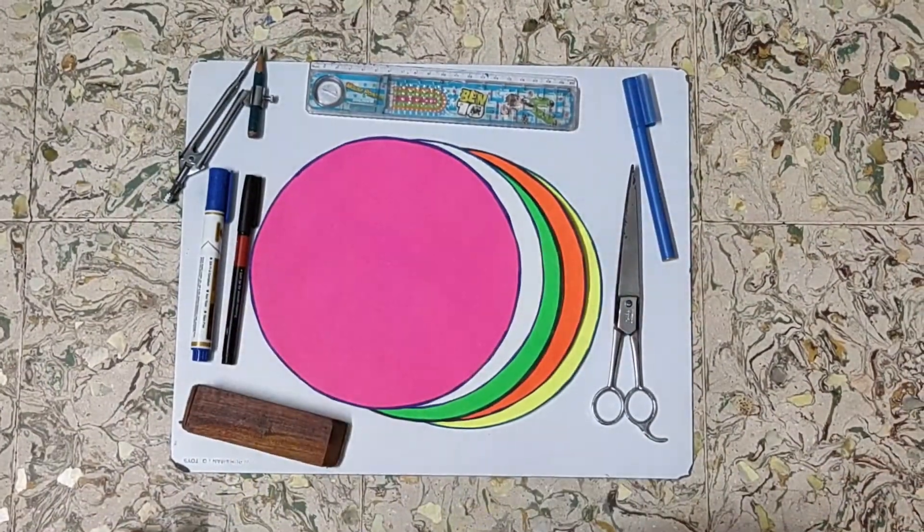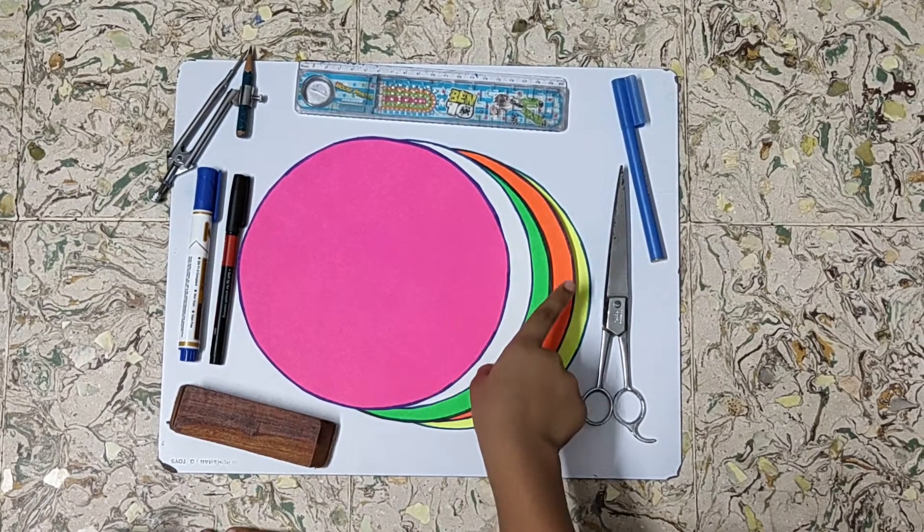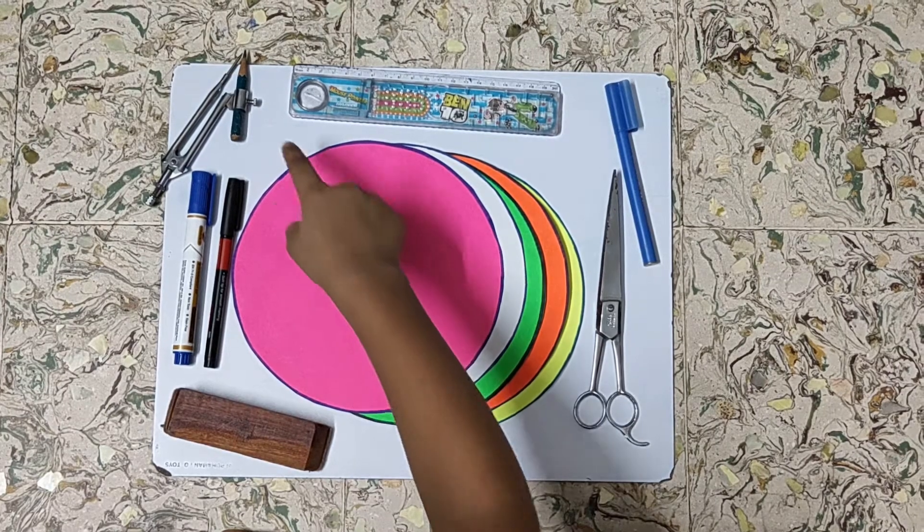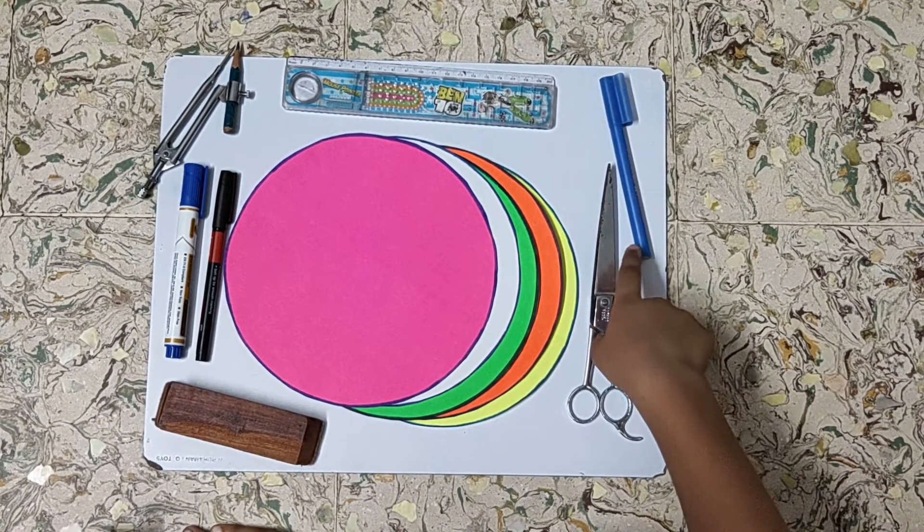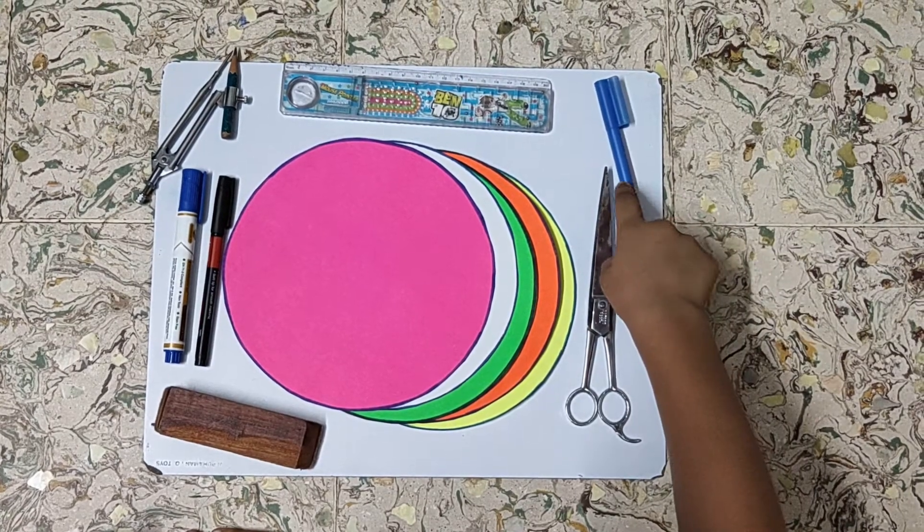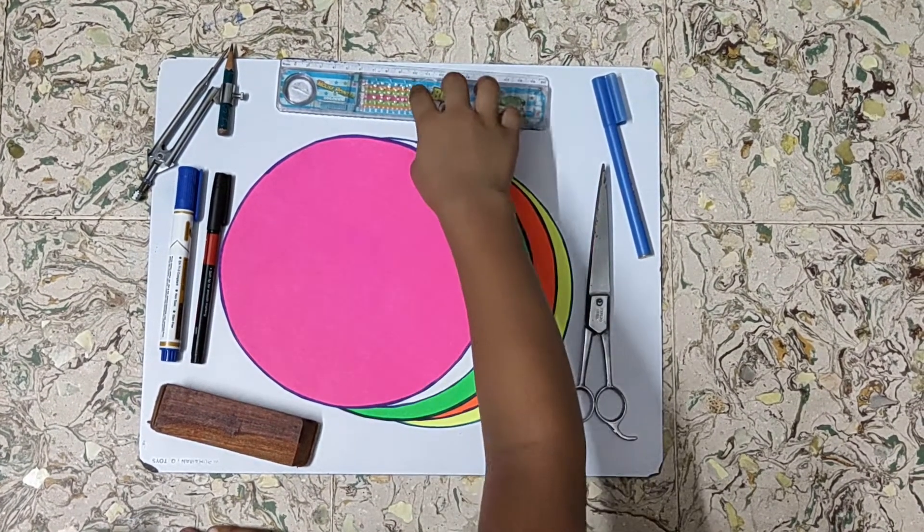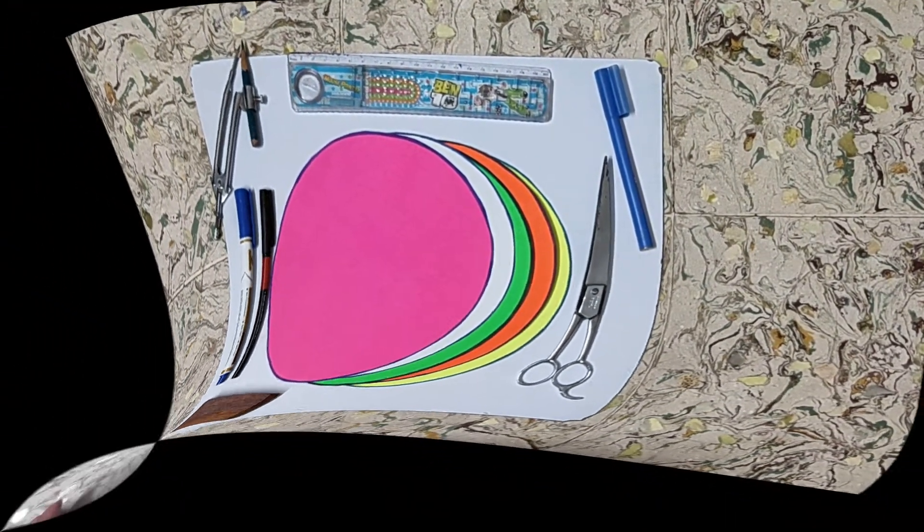We need a whiteboard. Here, I have taken different color of chalk papers. First, I have drawn the circles using pencil compass and cut it using scissor, a loose sketch pen, thick and thin marker, scale and duster. So let's start the paper folding activity.